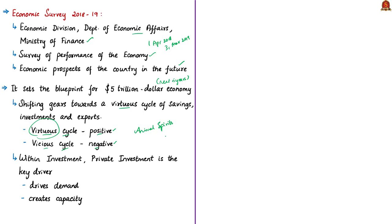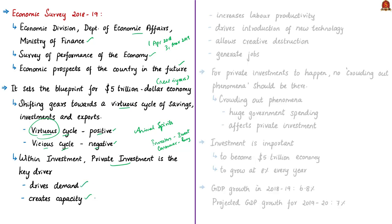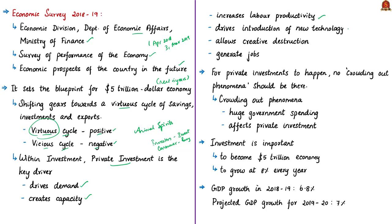Animal spirits in economics refer to the psychological urge of investors and consumers to engage in more economic activity — it is economic optimism and confidence. This drives investors to make more investments even when there is uncertainty, understanding that higher investment will rejuvenate economic growth. In this virtuous cycle, private investment is the key driver: it drives demand, creates capacity, increases labor productivity, drives introduction of new technology, allows creative destruction, and generates jobs.